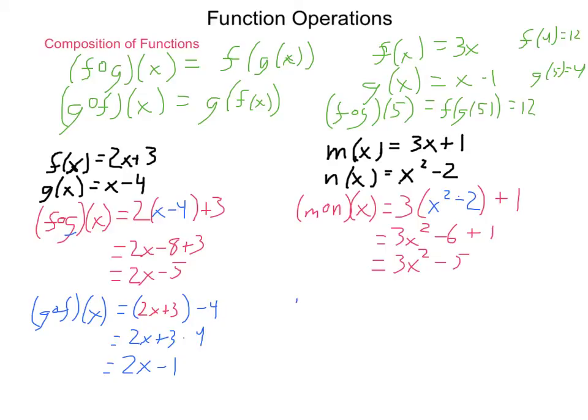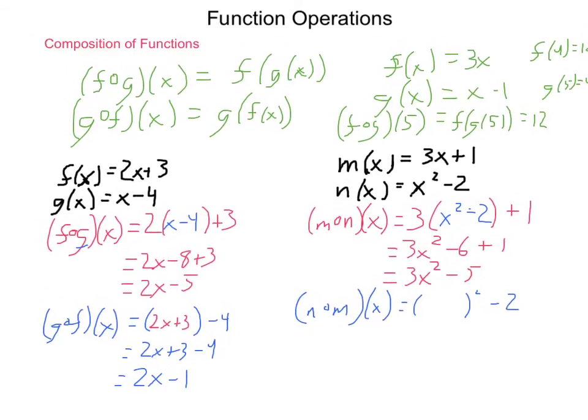Now, n composed with m of x is whatever our m equation is squared minus 2. And our m equation is 3x plus 1. Squaring, we're going to end up here with 9x squared plus 6x plus 1 minus 2, which is equal to 9x squared plus 6x minus 1. So, we get some fairly different answers here as we go through.